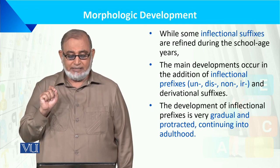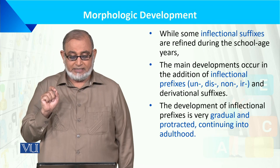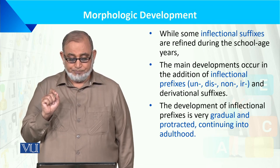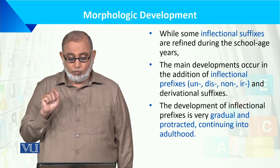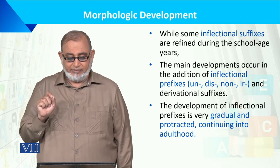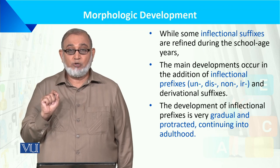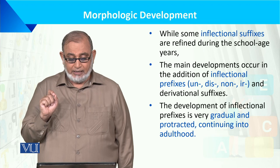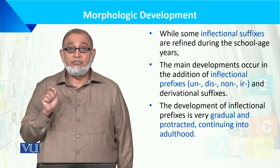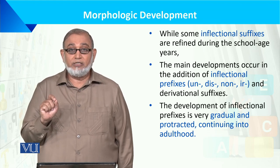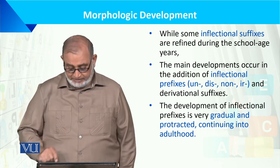The main development occurs in the addition of inflectional prefixes جیسے un, dis, non, ir and derivational suffixes. The development of inflectional prefixes is very gradual — یہ بہت مشکل concepts ہوتے ہیں اور gradually بچوں میں develop ہوتا ہے، continuing into adulthood۔ اس کے لئے practice کی ضرورت ہے جب بچوں میں complex language develop ہوتی ہے۔